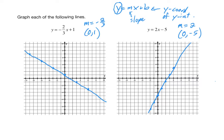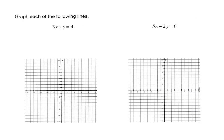Let's do a couple of examples where the equation is not already in slope-intercept form. Here are two more lines we want to graph: 3x plus y equals 4, and 5x minus 2y equals 6. They're both linear equations. The most common error students make is they say the slope is 3 — the coefficient of x — but remember, you can't read off the slope or the b value unless it's in y equals mx plus b form. The key is that y needs to be totally isolated by itself on one side of the equation. So the slope of this line is not 3.